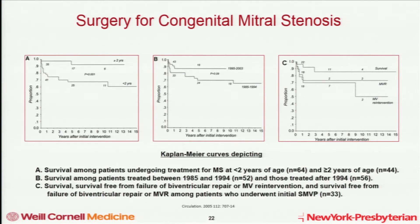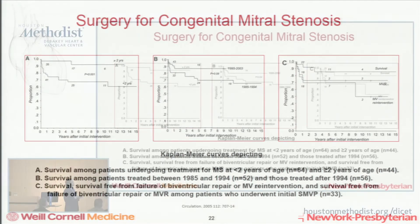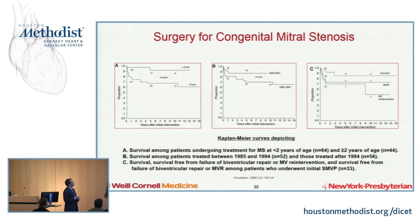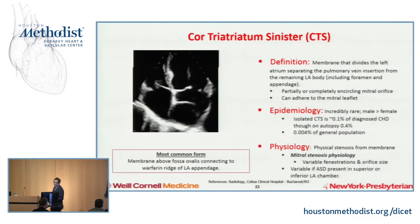Looking at the Kaplan-Meier curves showing survival among patients undergoing treatment for mitral stenosis, you generally see a benefit and better survival when able to wait until two years, depending on clinical symptoms. From the Boston series, surgery happening in the last decade — from 1995 to 2003 — showed better outcomes, perhaps from a learning curve or new techniques. Among patients who had initial surgical balloon mitral valvuloplasties, differences are seen in total survival, how many required mitral valve replacement, and how many required re-intervention. The re-intervention rates are pretty high at early timepoints — about 30% to 40% will need another procedure within one to two years.